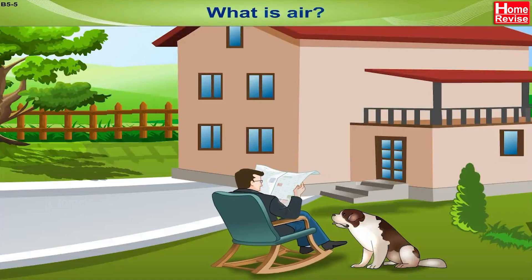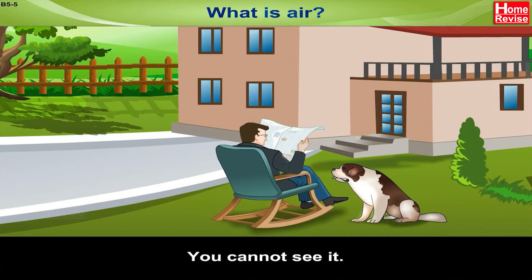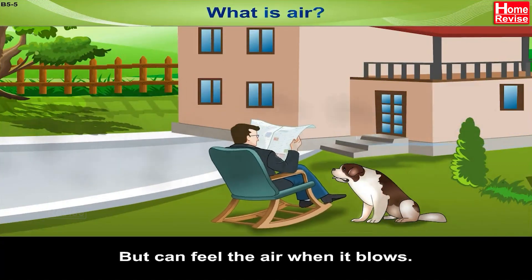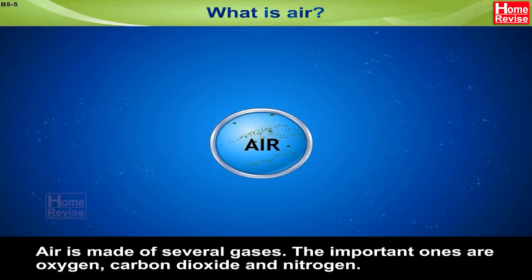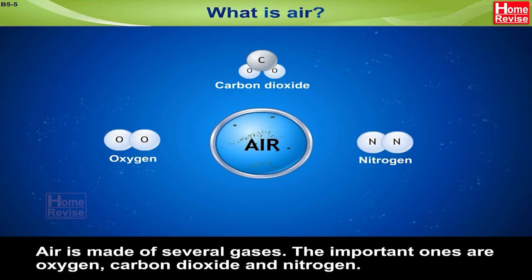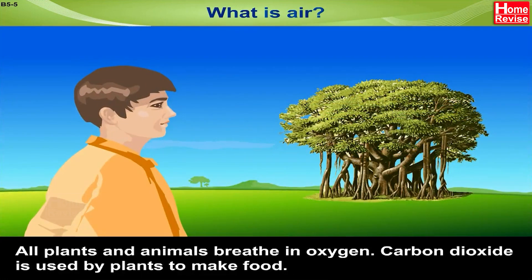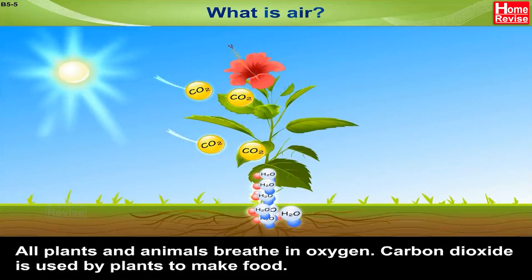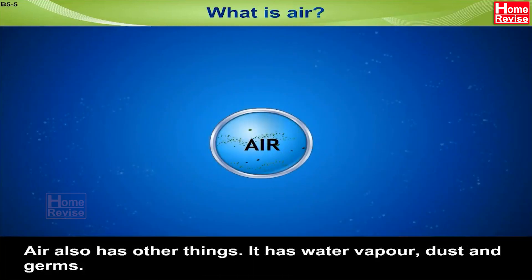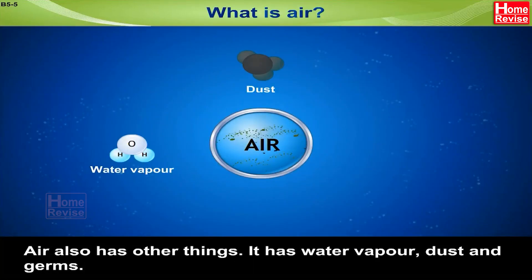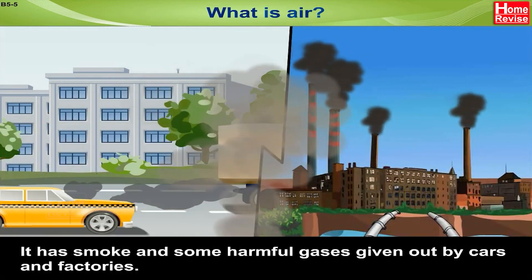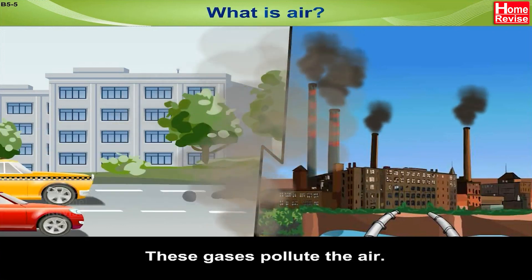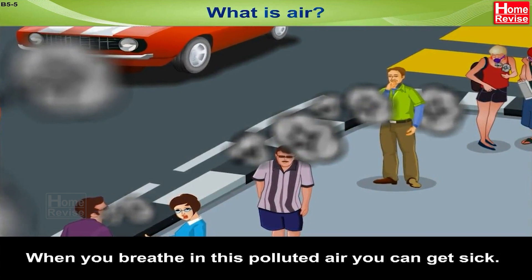What is air? You are surrounded by air. You cannot see it, but you can feel the air when it blows. Moving air is called wind. Air is made of several gases; the important ones are oxygen, carbon dioxide and nitrogen. All plants and animals breathe in oxygen. Carbon dioxide is used by plants to make food. Air also has water vapour, dust, germs, smoke and some harmful gases given out by cars and factories. These gases pollute the air, and when you breathe in this polluted air, you can get sick.